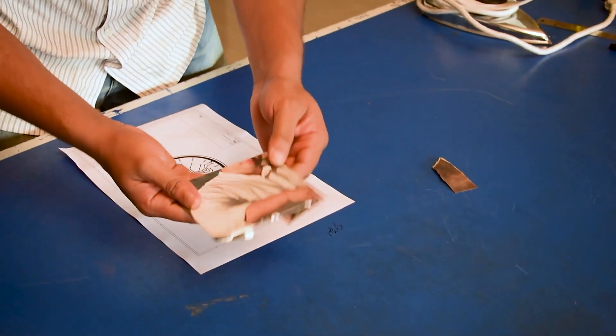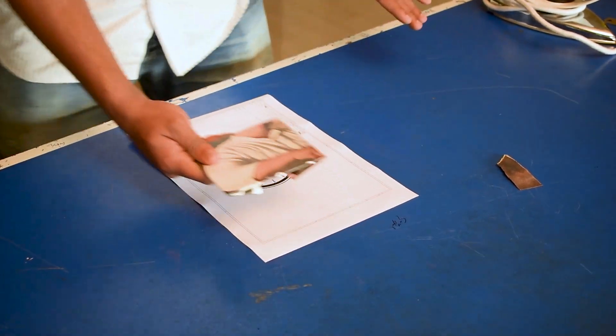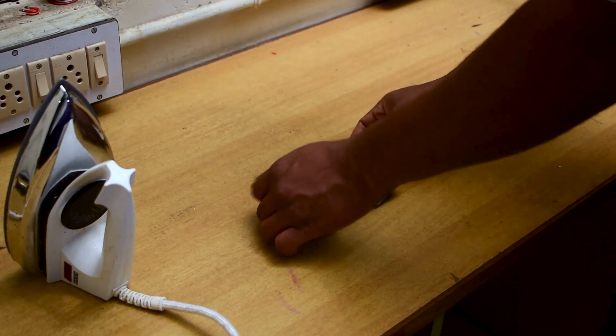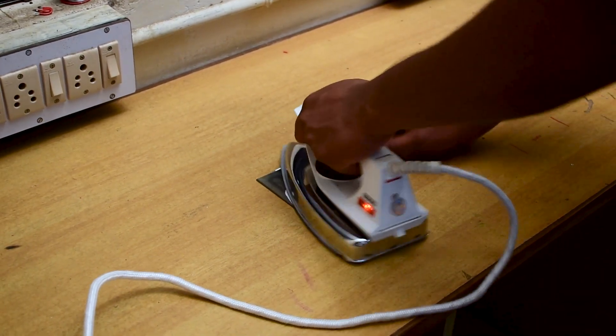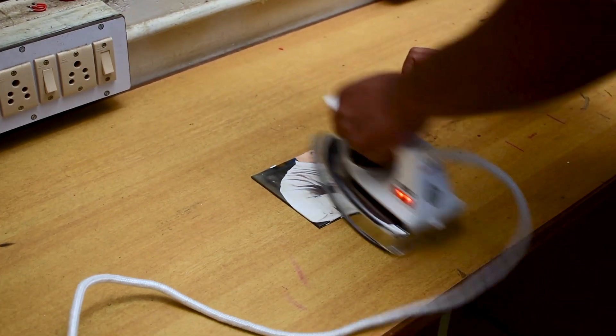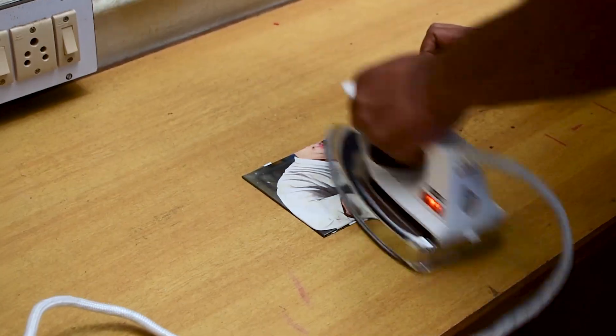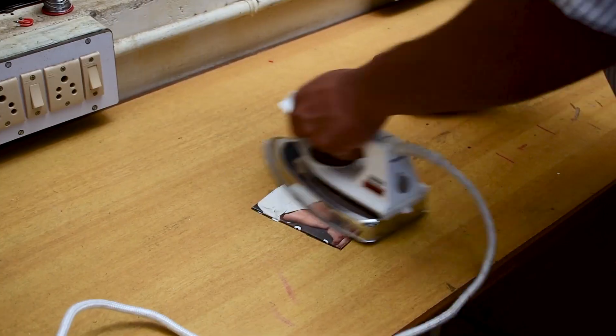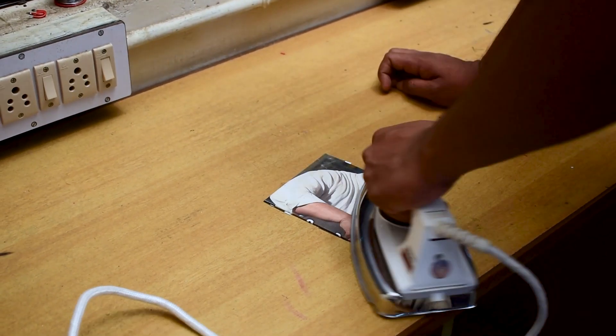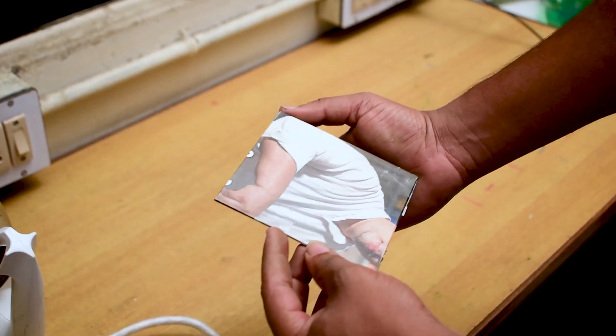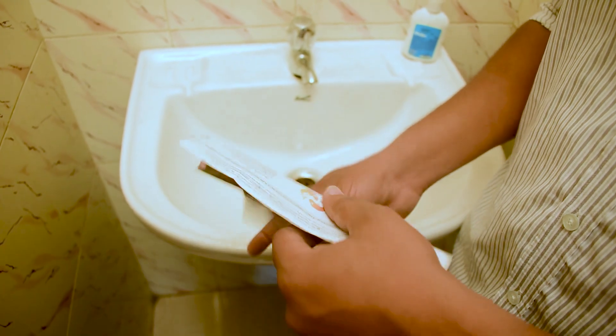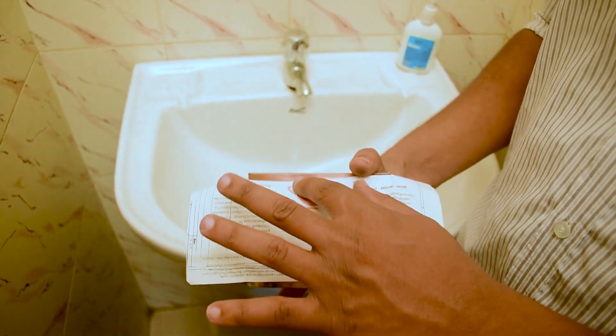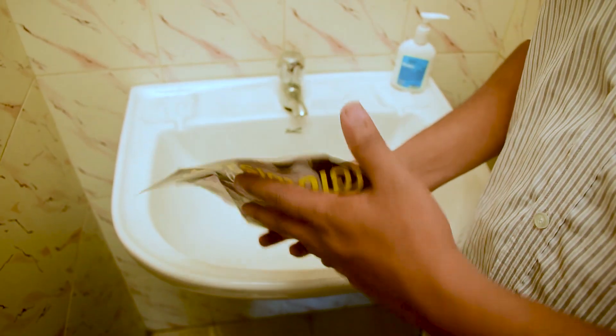We have to heat for transferring the design from paper to the cladboard. We can use an iron box for that. Move the iron box constantly for better heat transfer. Continue the heating process until the design is visible on the outer side of the paper. Let's remove the paper from the cladboard. Paper will be sticky on the board, so we have to use some water for removing the paper from the cladboard.